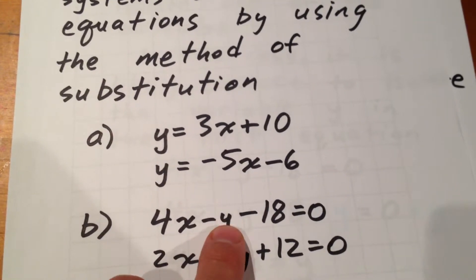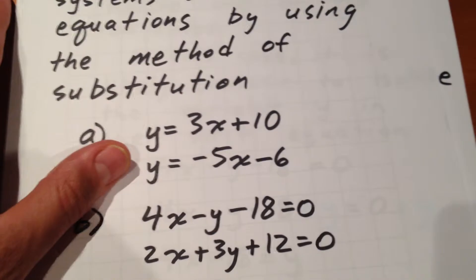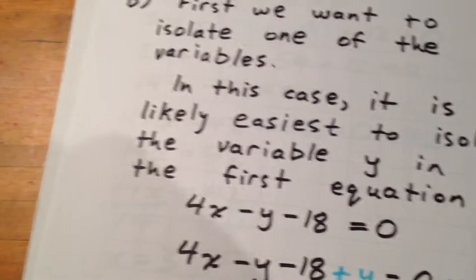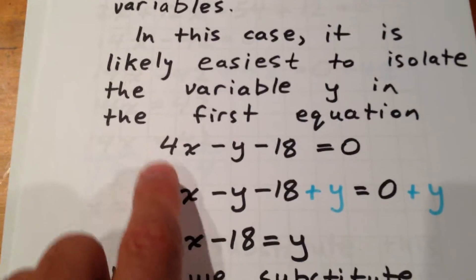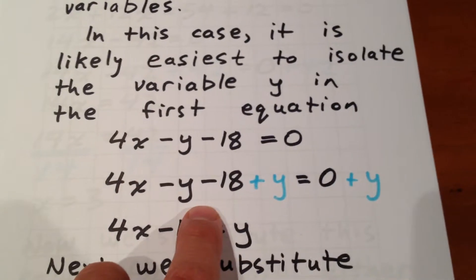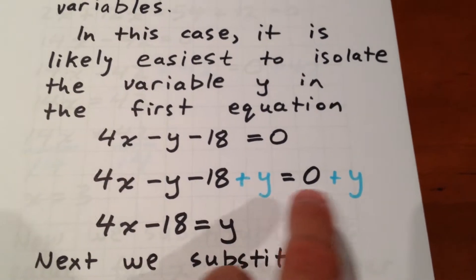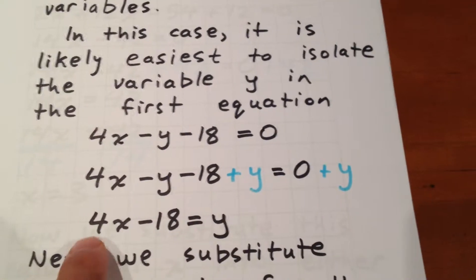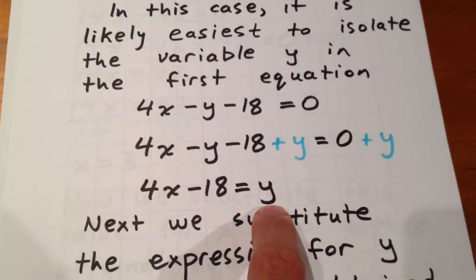So what we do, we know that 4x minus y minus 18 equals 0. We're trying to isolate the y so we're going to add y to each side. And that lets us know that 4x minus 18 equals y.